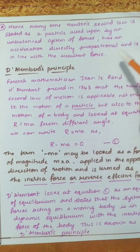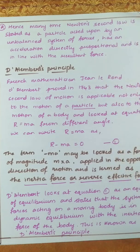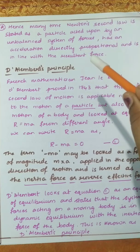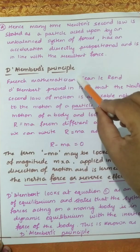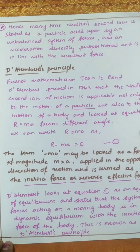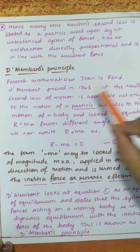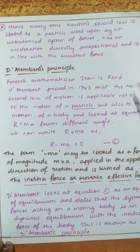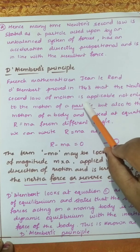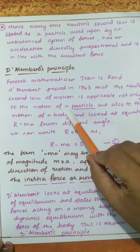Newton's second law can also be stated as: a particle acted upon by an unbalanced system of forces has an acceleration directly proportional to and in line with the resultant force. D'Alembert's principle was coined by French mathematician Jean le Rond d'Alembert in the year 1743. He extended Newton's second law to apply not only to the motion of a particle but also to the motion of a body.